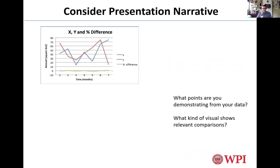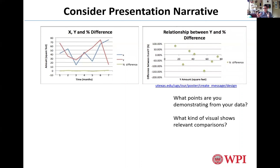Here's an example of a graph straight out of Excel. I don't like the horizontal grid lines. More importantly, what are they trying to say? Are they trying to say X and Y are different? If the difference is what you're really trying to convey, show a separate graph that just plots the difference — you can show that you have a 100% difference in some places and a 50% difference in others. If that's the important point, it has to come through clearly.